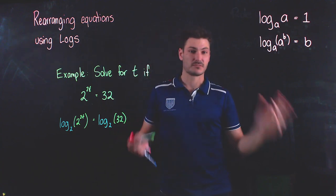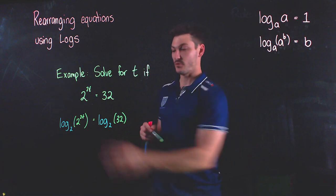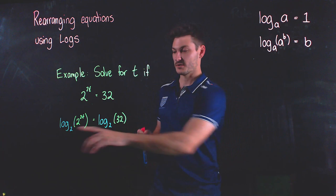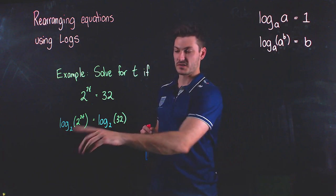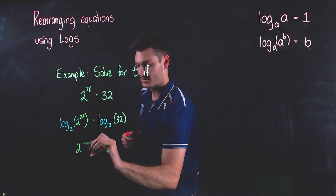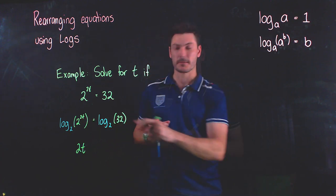All right, now two things are happening right now. First of all, we've set up a situation, and you're allowed to take logs of both sides. We've set up a situation such that this log base two and this two are going to cancel, so my left hand side is just going to become two t, what's in this power here.